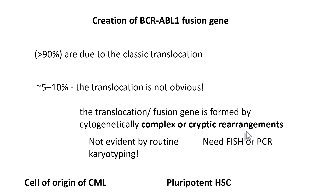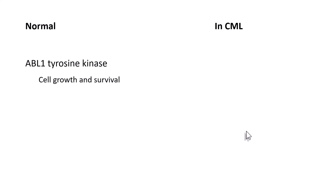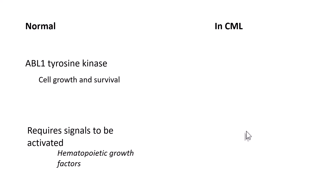The cell of origin of CML is the pluripotent hematopoietic stem cells. Because it is pluripotent hematopoietic stem cells, there is uninhibited proliferation. In normal conditions, the ABL1 tyrosine kinase on chromosome 9 is responsible for cell growth and survival, and it needs a signal to be activated — those signals are hematopoietic growth factors. But in patients with CML, there is a fusion gene where the BCR part enforces self-activation through dimerization.